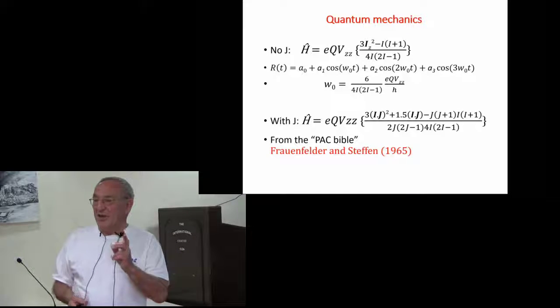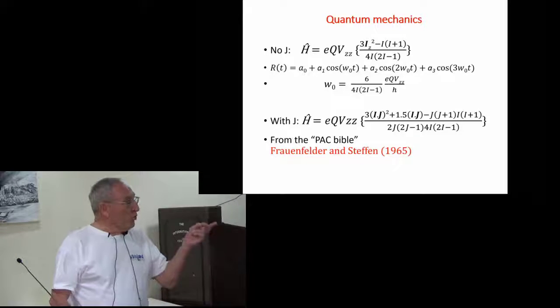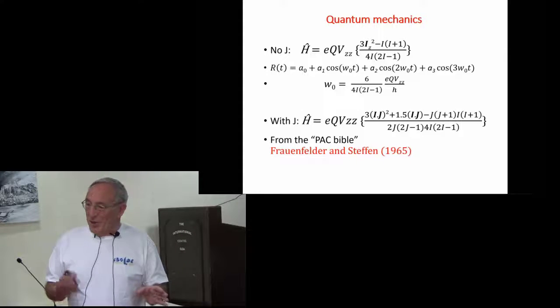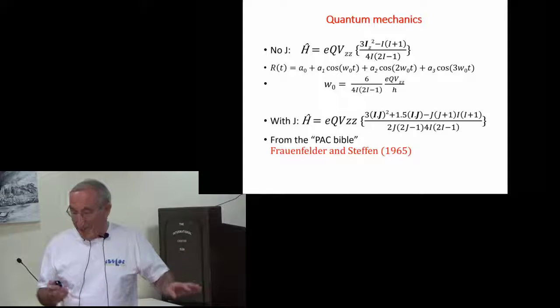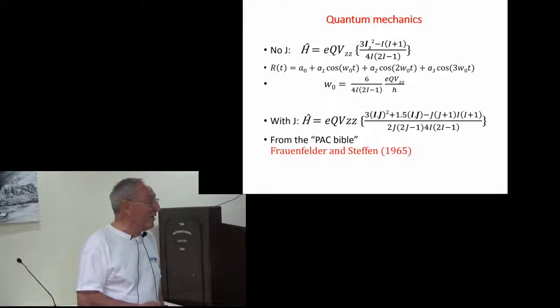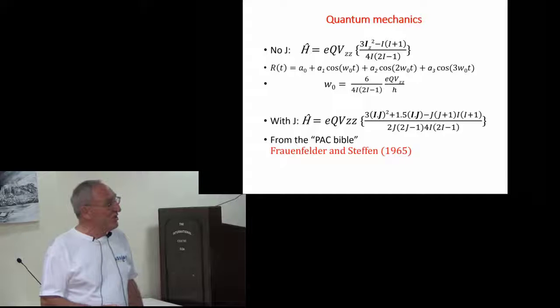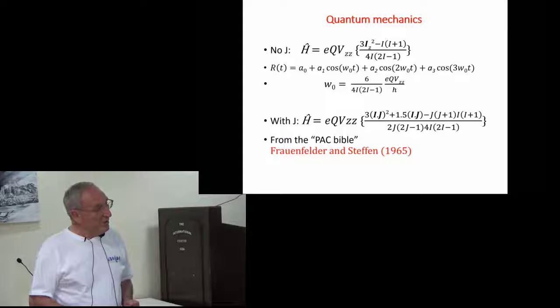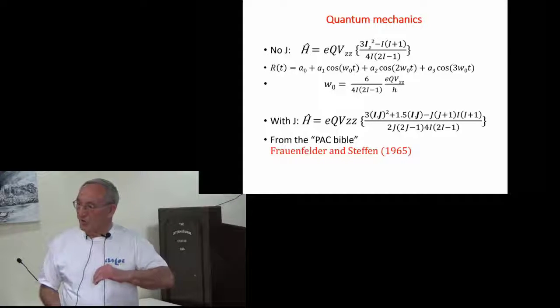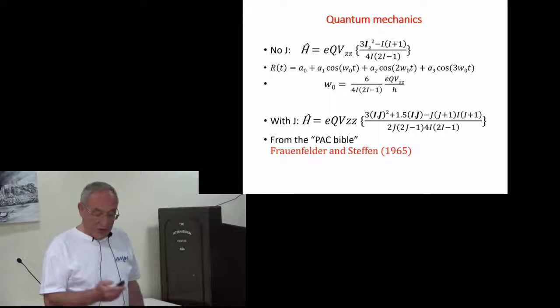To look at the coupling between the rotational momentum and the nuclear spin, and I will tell you what the final problem was then, you simply look at the Bible. And the Bible for PAC spectroscopy is the Frauenfelder-Steffen article, and he has an interaction frequency where the nuclear spin, and in this case the rotational spin couples. These numbers were actually for the atomic angular momentum, but it's our rotational angular momentum that we have to treat.